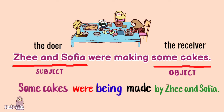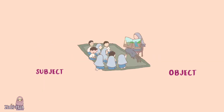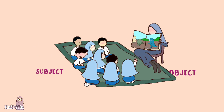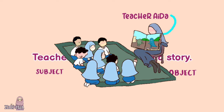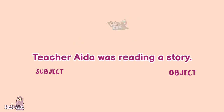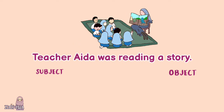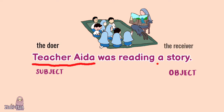Changing a sentence into its passive voice is easy, isn't it? Now let's try another example. Look at the picture. Teacher Aida was reading a story. Can you identify the doer? Yeah, the doer is Teacher Aida, and it's clear here that the receiver is a story.